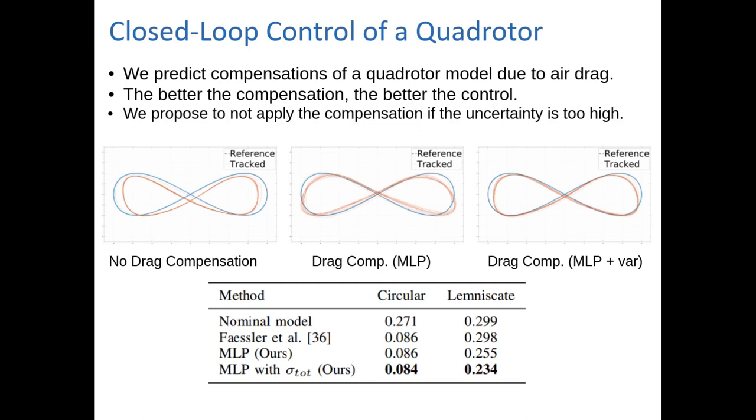We also studied the problem of closed-loop control of a quadrotor, where we basically show that keeping uncertainty into consideration for control, specifically not applying an action if the neural network is not really sure about it, improves tracking performance and decreases the odds of a crash.